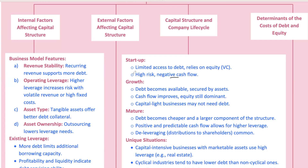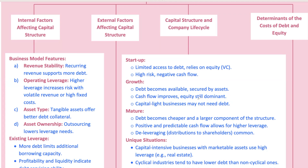In the growth phase, revenues pick up and cash flows become more predictable. Companies still rely on equity, but they can now start to use debt as well, as lenders become more comfortable because the company has proven its ability to generate cash. For example, Amazon during its growth phase began using debt to finance infrastructure like warehouses and data centers as its revenue streams became more predictable and stable.